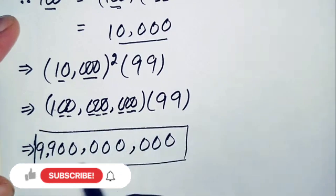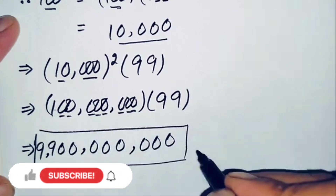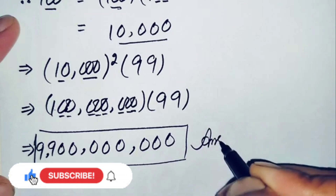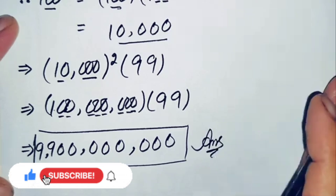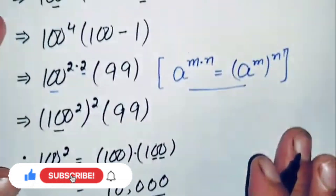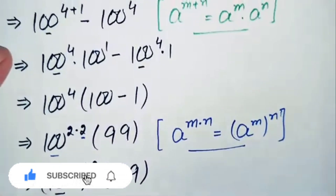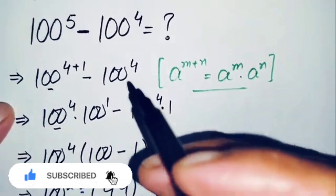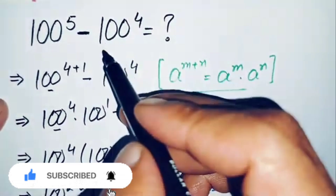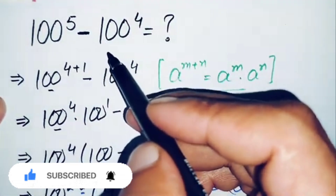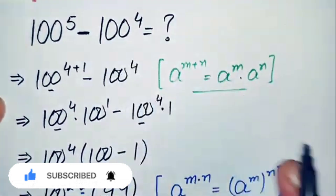So finally, 9 billion 900 million is our answer and the value of this nice and interesting simplification math problem.